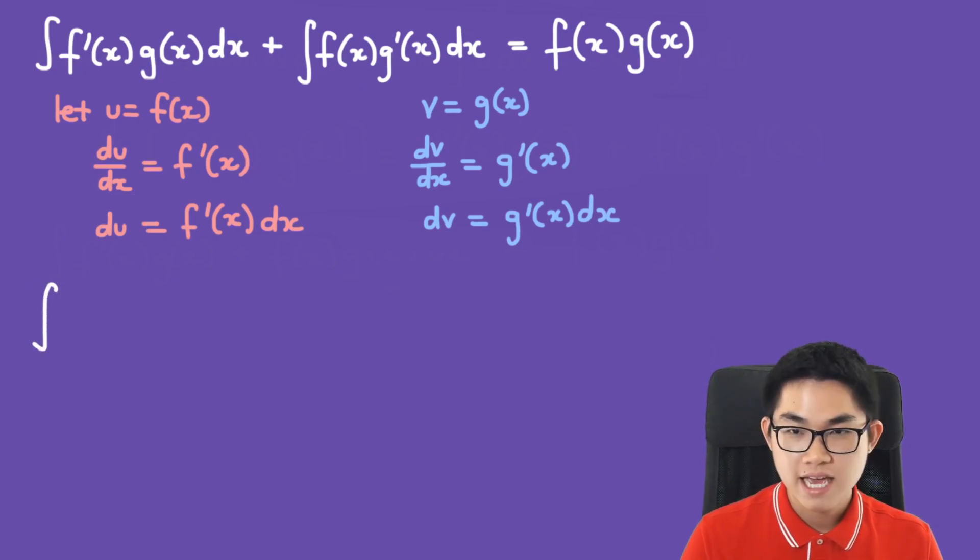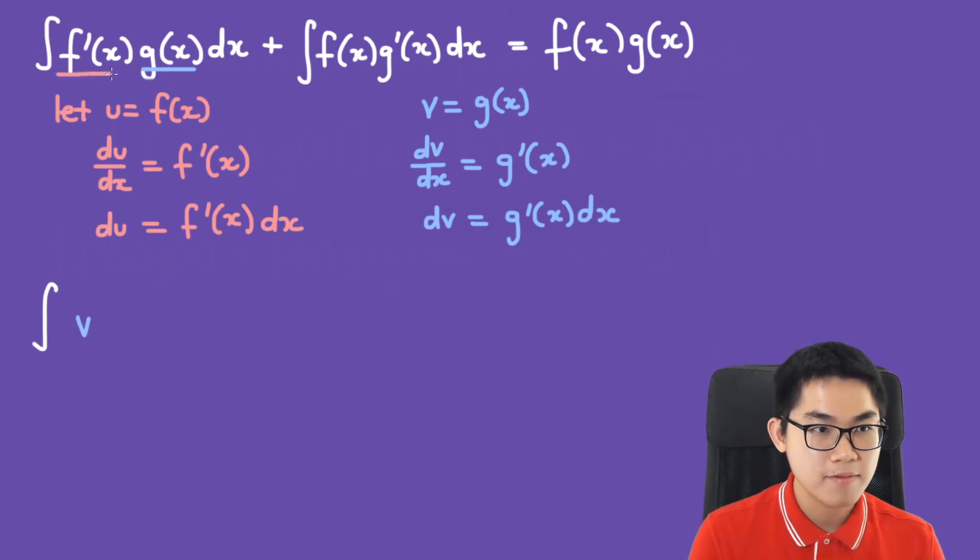So dv is g'(x) times dx, and we're almost done.